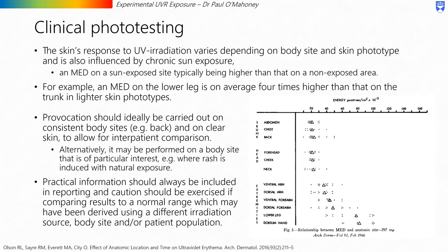Some notes on clinical phototesting. The skin's response to UV irradiation varies depending on the body site and the skin phototype, and is also influenced by chronic sun exposure. An MED on a sun-exposed site is typically higher than that on a non-exposed area. For example, an MED on the lower leg is on average four times higher than that on the trunk in lighter skin phototypes. Provocation should ideally be carried out on consistent body sites, usually the back, and on clear skin, to allow for interpatient comparison. Alternatively, it may be performed on a body site of particular interest, for example where a rash is induced with natural exposure. Practical information should always be included in reporting, and caution should be exercised if comparing results to a normal range derived using a different irradiation source, body site, or patient population.